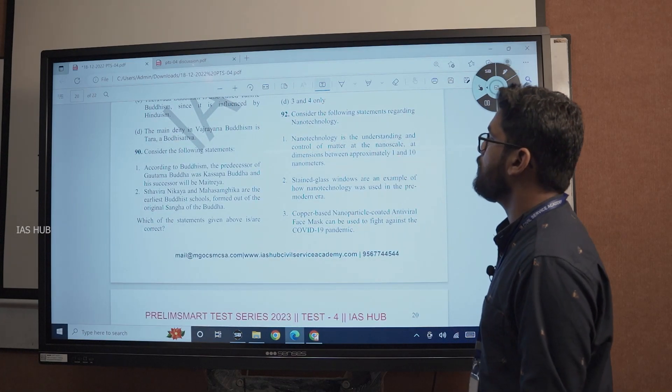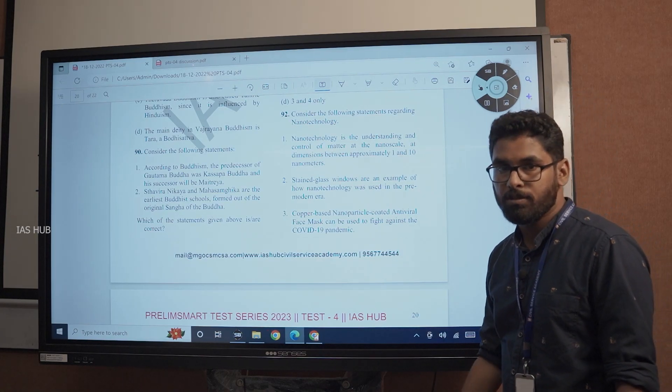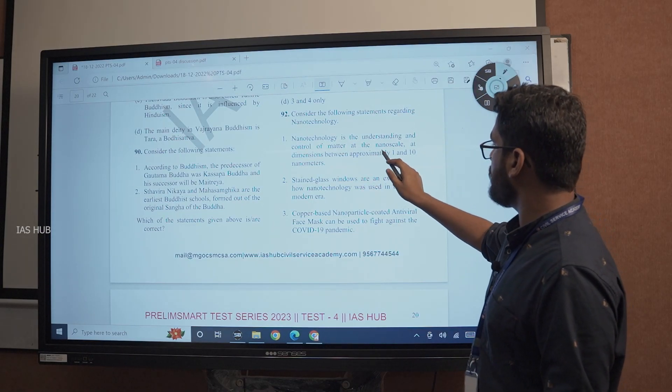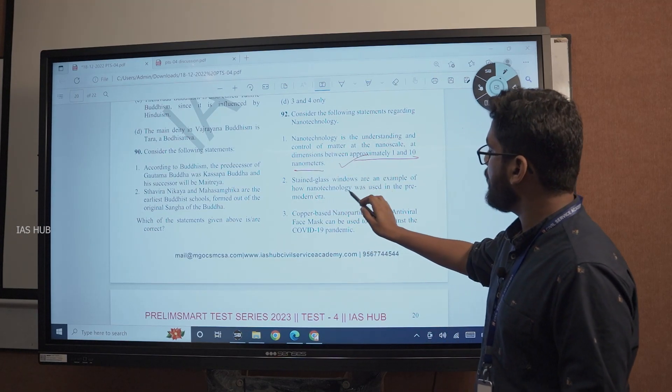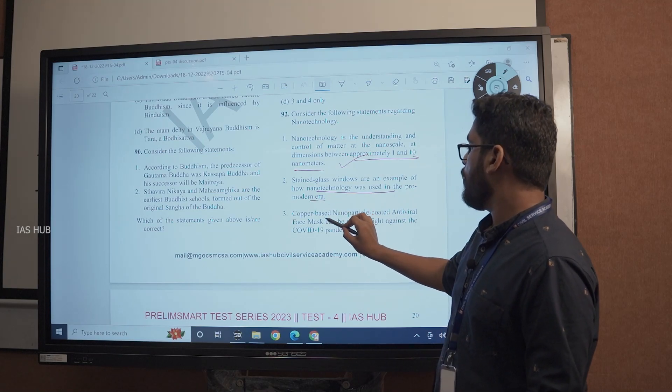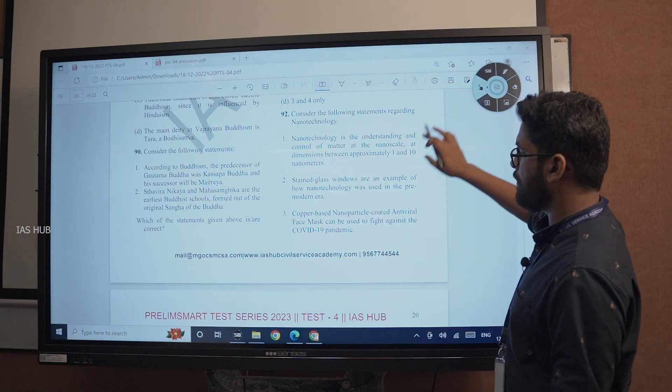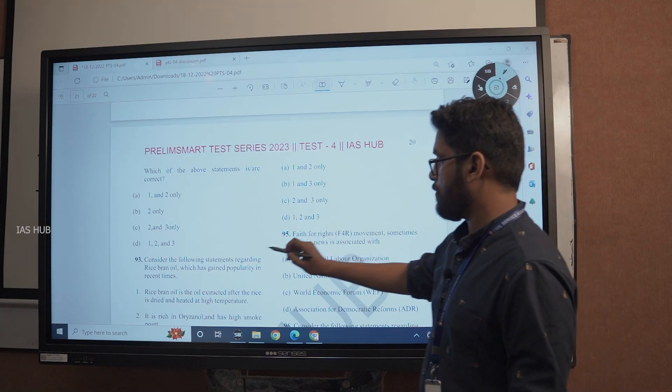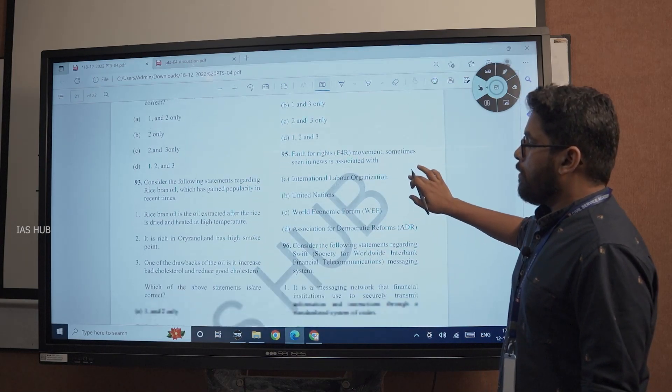Coming to 92nd question. Consider the following statements regarding nanotechnology. Basic science and tech question. Nanotechnology is the understanding and control of matter at nanoscale at dimensions between approximately 1 and 10 nanometers. That is very correct. Stained glass windows are an example of how nanotechnology was used in the pre-modern era. Copper based nanoparticle coated antiviral face mask can be used to fight against Covid-19 pandemic. Very basic general statements. Definitely all statements will be correct.